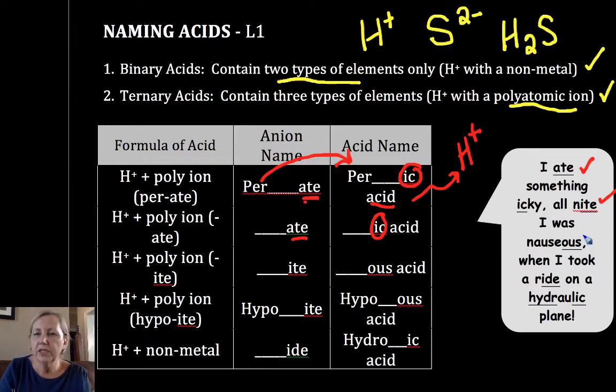'All night I was nauseous.' So if the anion ended in -ite, you change it to -ous and add the word acid. Hypo-ite becomes hypo-ous. So -ite becomes -ous regardless of whether it had a prefix or not.